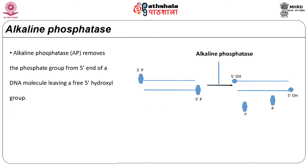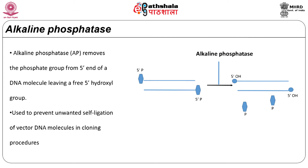The enzyme alkaline phosphatase removes the phosphate group from the 5-prime end of a DNA molecule, leaving a free 5-prime hydroxyl group at that position on the nucleotide. It is used to prevent unwanted self-ligation of vector DNA molecules in cloning procedures. These enzymes are most active at alkaline pH, hence the name. Alkaline phosphatase is isolated from bacteria or calf intestine. The bacterial alkaline phosphatase is more active compared to the calf intestine one, but it is often difficult to inactivate it at the end of the dephosphorylation reaction. The calf alkaline phosphatase, on the other hand, can be inactivated by adding a protease or by heating the reaction mixture.